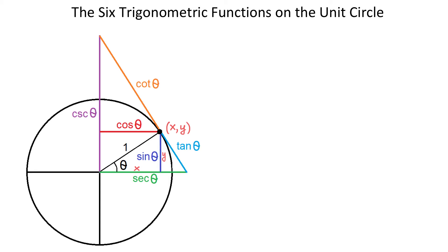By definition, we know that in a right triangle, sine of an acute angle theta equals the opposite side divided by the hypotenuse. In this right triangle, the side that is opposite of angle theta is y, and the hypotenuse is 1. So, sine of theta equals y divided by 1, which is y. The value of sine of theta is the same as the value of y, so this line segment represents sine of theta.